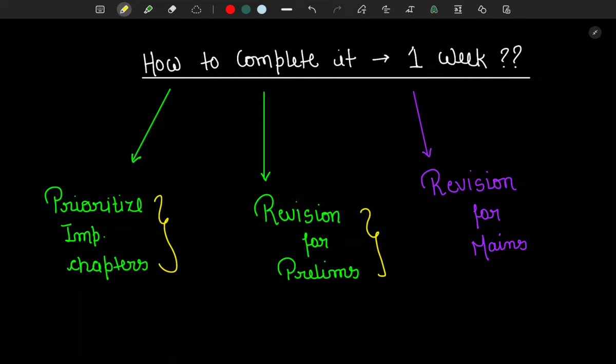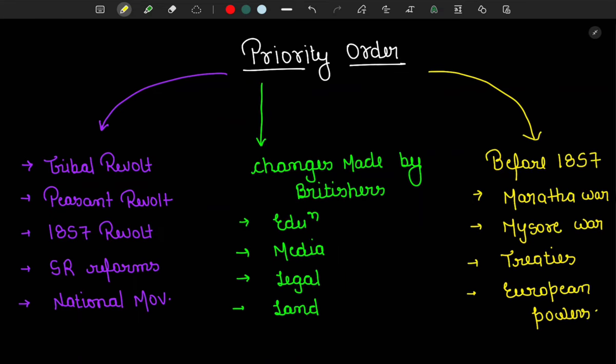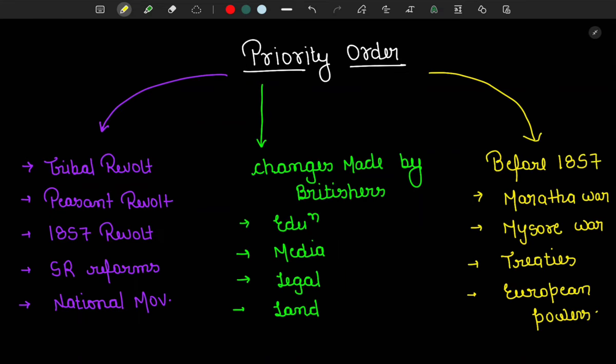How can we revise for Mains? If I share my personal opinion, for Mains I have my notes of 12 to 13 pages, so Mains revision is not an issue. But for Prelims, I have written in the book itself — I'll show you in this video. What will be the priority order to read the Spectrum?